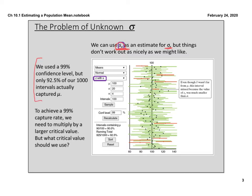For example, if we use a 99% confidence interval, only 92.5% of our 1,000 intervals actually captured the true mean. To achieve a 99% capture rate we need to multiply by a larger critical value — so our intervals are going to widen here a little bit. They naturally have to widen to capture the true mean, and to make them widen we're no longer going to be using a z test. Instead, we're going to be using a t test.